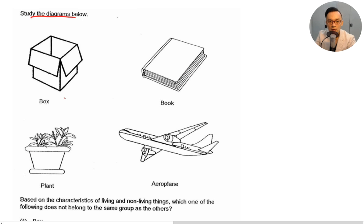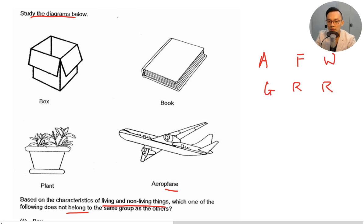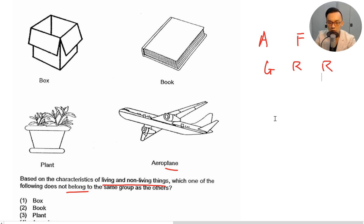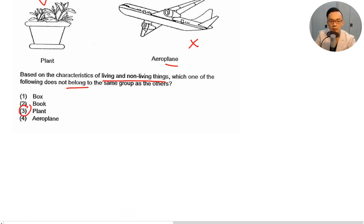Study the diagrams: a box, a book, a plant, and an aeroplane. Based on the characteristics of living and non-living things, which one does not belong to the same group? The box is not a living thing, the book is not a living thing, the aeroplane is not a living thing — but the plant is a living thing. So the answer is the plant, number three.